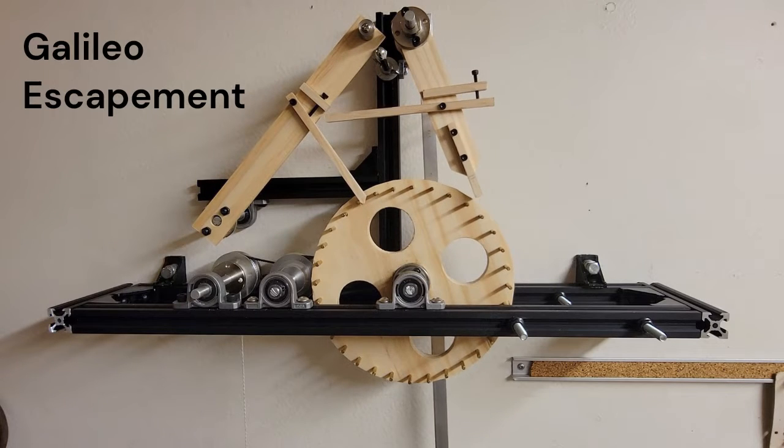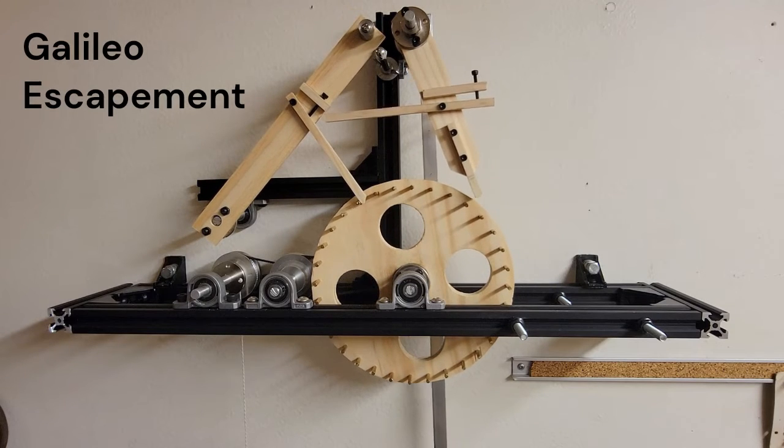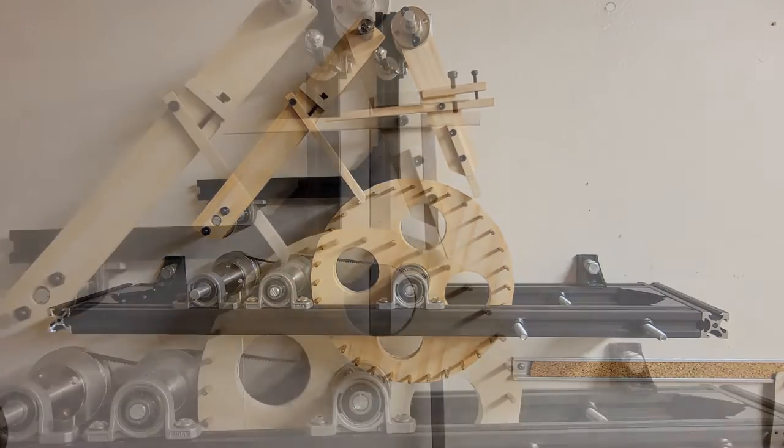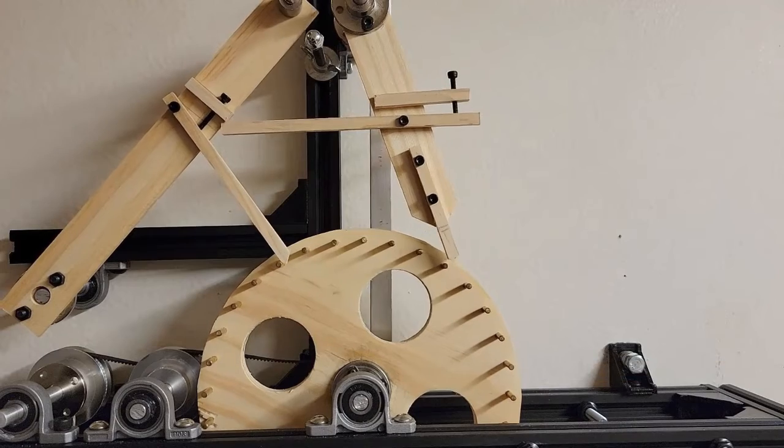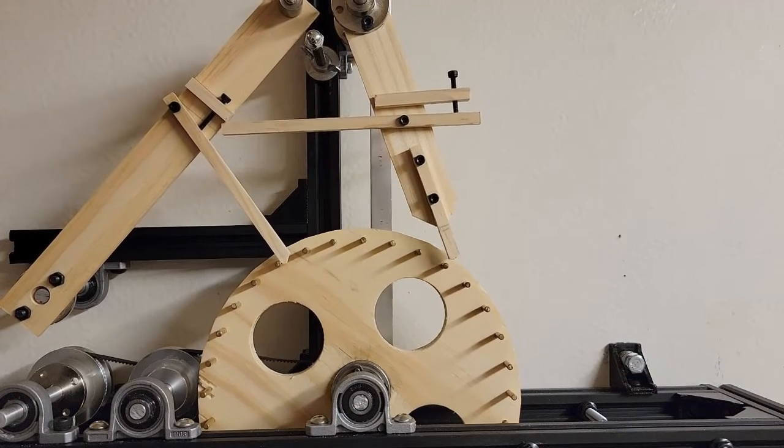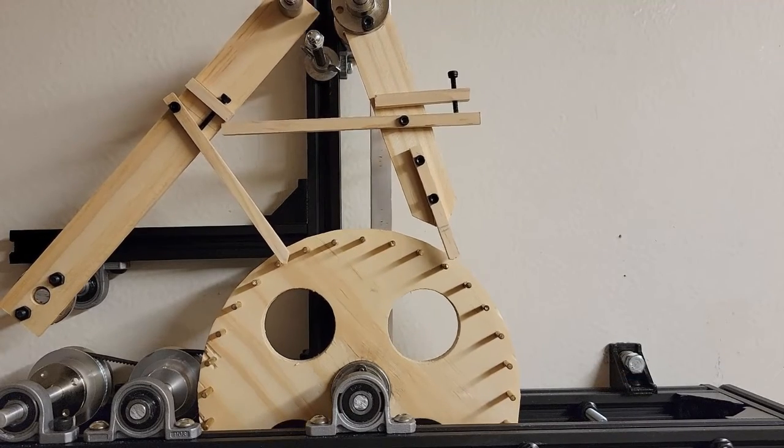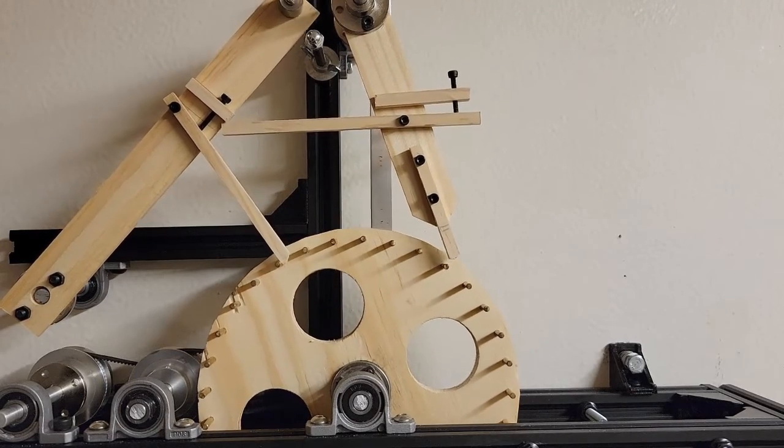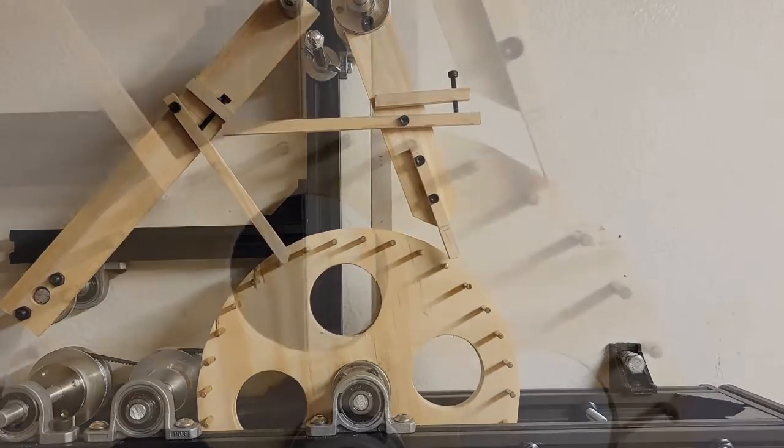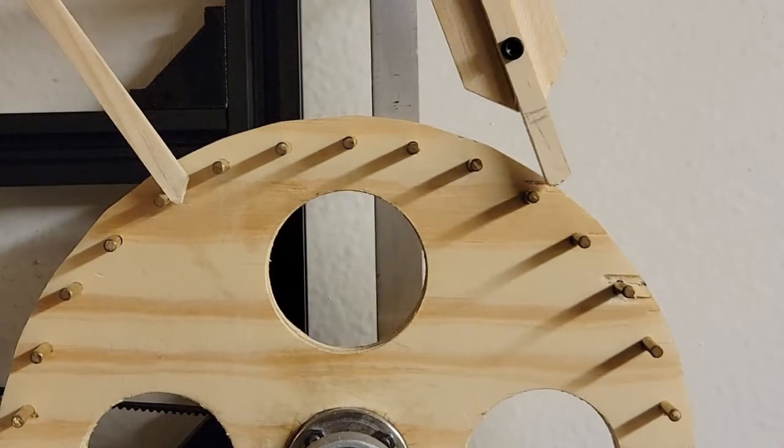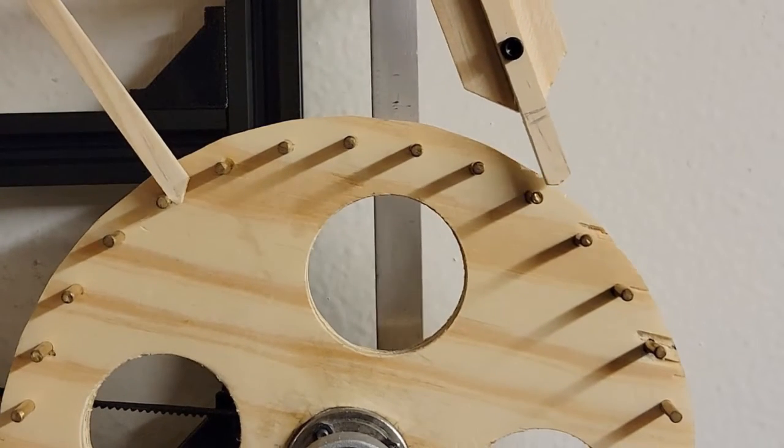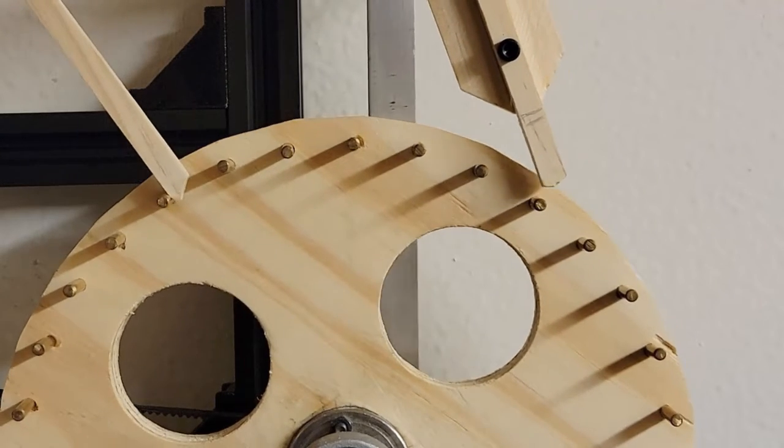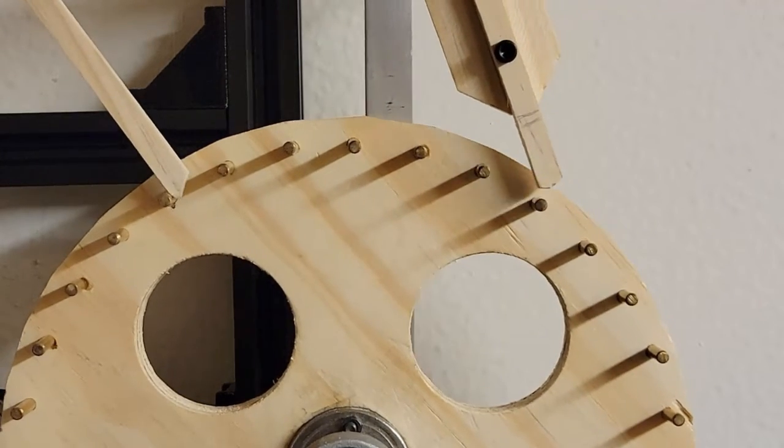The first escapement is the Galileo escapement designed by Galileo in about 1637. It has an independent catch bar and a separate pushing pallet with a second bar that lifts the catch. Especially with this tight pin spacing this was my most difficult build. Getting each bar to the correct length and position took hours of trial and error.